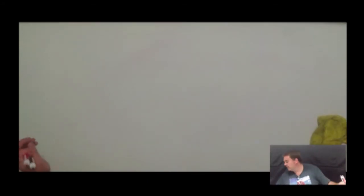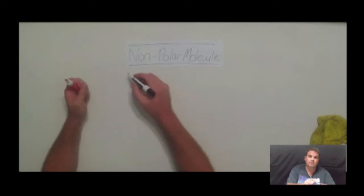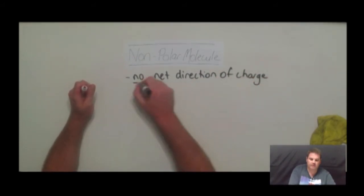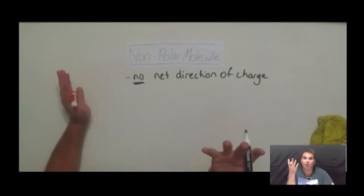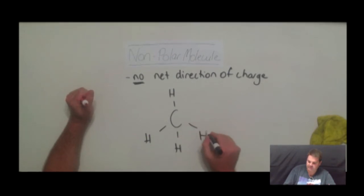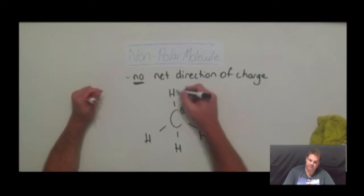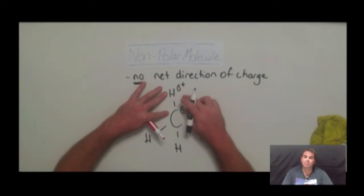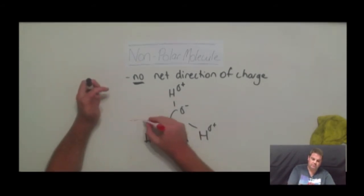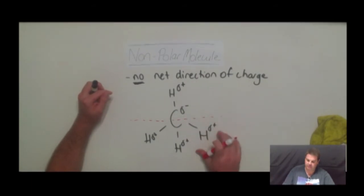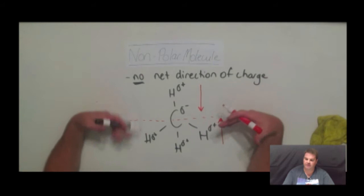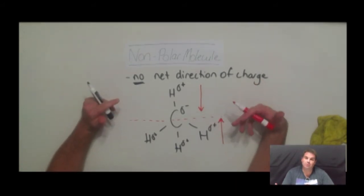Going the opposite way, a non-polar molecule has no net direction of charge. It's important to know that you can have polar bonds within a non-polar molecule. Take methane: carbon is more electronegative because it's closer to fluorine, so each C-H bond is a polar covalent bond with a direction of charge. However, if we put a line through the middle of the molecule, the directions of charge cancel out — positive to negative going one way and positive to negative going the other way. So this molecule overall has no net direction of charge — it's non-polar.